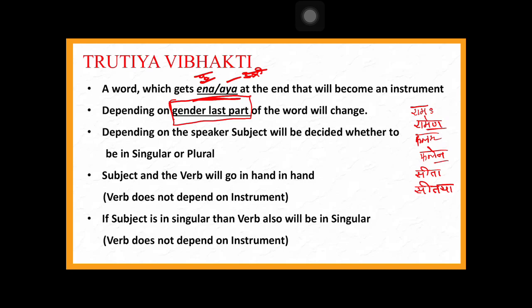Unlike dvithiya vibhakti where we just add 'ma,' in tritya vibhakti gender matters: pullinga gets 'ena,' strilinga gets 'ayah.' The subject remains in prathama vibhakti, and subject-verb agreement is unchanged. Example: aham vahanena gachami — I go by vehicle. Ramaha vahanena gachati — Rama goes by vehicle.